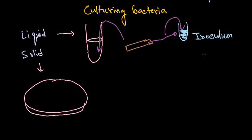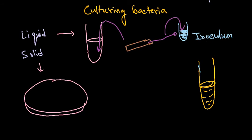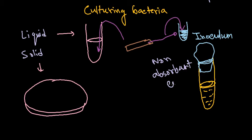After stirring, we plug up the liquid media. Media is never left open — it's always plugged with non-absorbent cotton. The plugging is very tight. We use non-absorbent cotton specifically because if absorbent cotton is used, it can absorb liquid from the media, which is not desirable.